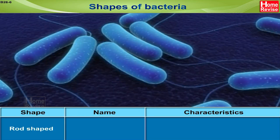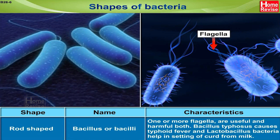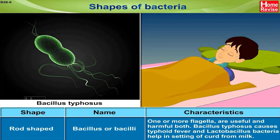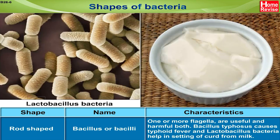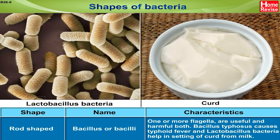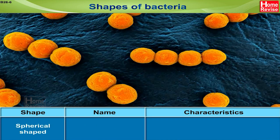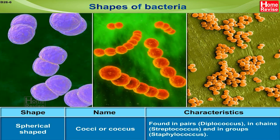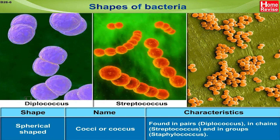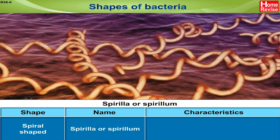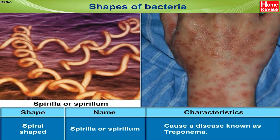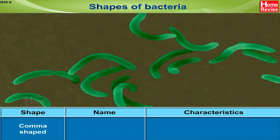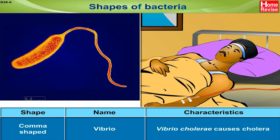Shapes of Bacteria: Rod-shaped bacteria are called bacillus or bacilli. They have one or more flagella and are both useful and harmful. Bacillus typhosis causes typhoid fever and Lactobacillus bacteria help in setting of curd from milk. Spherical shaped bacteria are cocci or coccus, found in pairs as diplococcus, in chains as streptococcus and in groups as cephalococcus. Spiral shaped bacteria are spirula or spirulum and cause a disease known as treponema. Comma shaped bacteria are vibrio; Vibrio cholerae causes cholera.